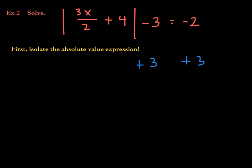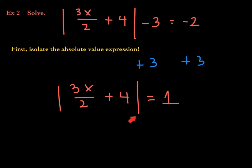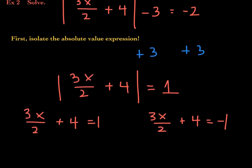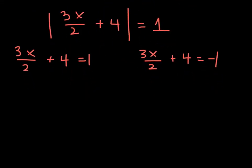After adding 3 to both sides, the absolute value of 3x/2 plus 4 is now equal to positive 1 — that's valid. So we turn it into a compound equation: 3x/2 plus 4 equals 1, or 3x/2 plus 4 equals negative 1. Then we solve each one separately to get two solutions.